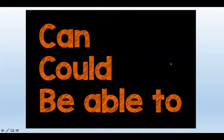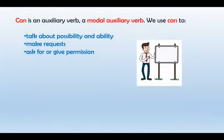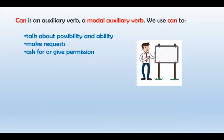Bien, comenzamos con el verbo modal Can, que también como verbo solo. Can es un verbo auxiliar, ya lo había mencionado, está dentro de la denominación del verbo modal. Can y sus usos son los siguientes: se puede utilizar para hablar de posibilidades y habilidades que posee una persona o algún sustantivo. Asimismo, para hacer peticiones y para dar o pedir permiso, también utilizamos Can.